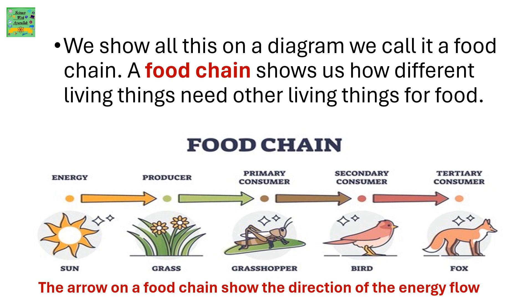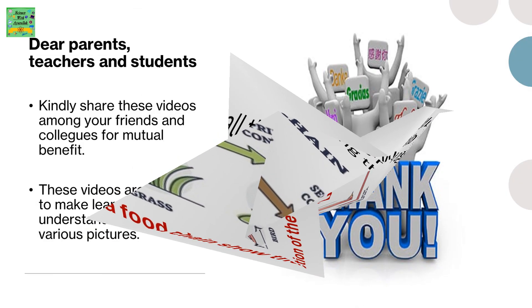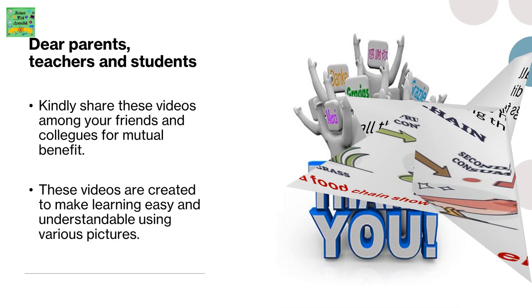We show all this on a diagram. We call it a food chain. A food chain shows us how different living things need other living things for food. The arrow on a food chain shows the direction of the energy flow.